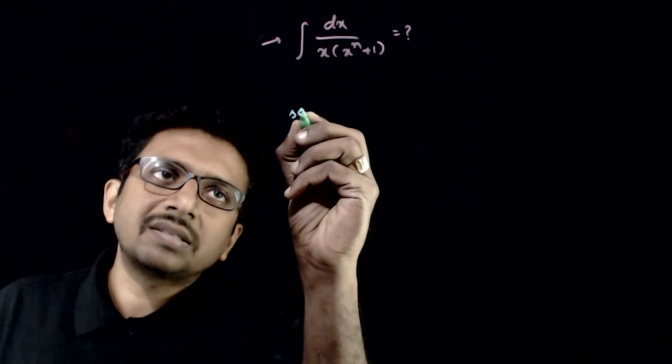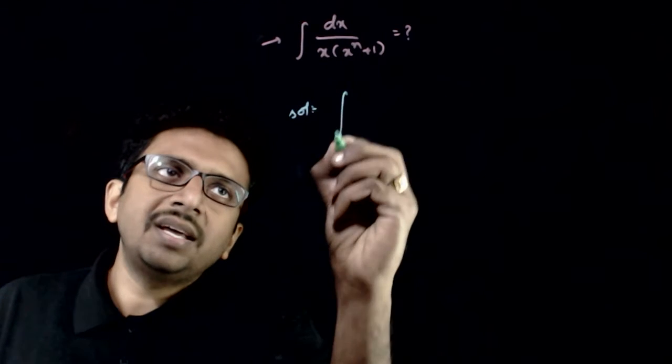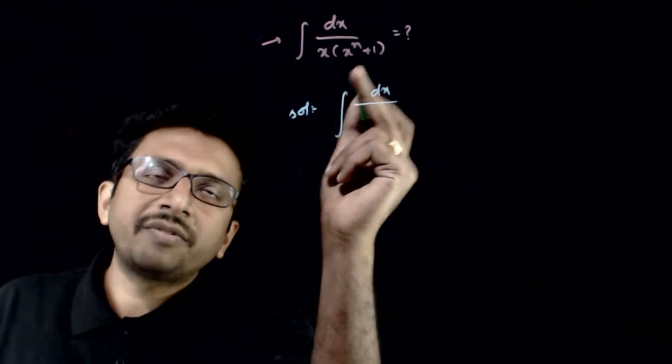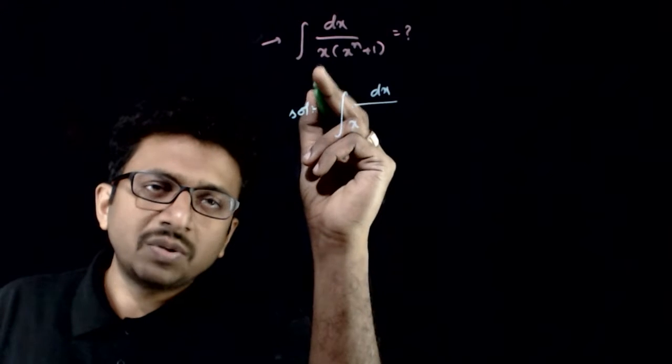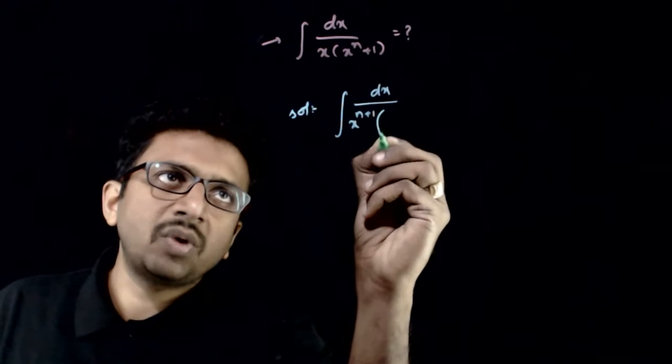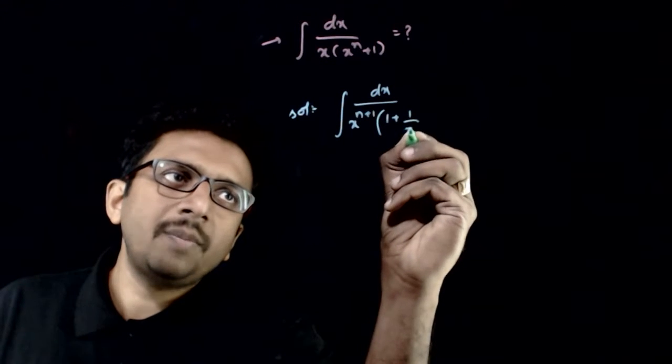What we do in this question is, in the denominator, I will take x power n common from the bracket. If I take x power n common, you have already an x outside, so you get x power n plus 1 times 1 plus 1 by x power n.